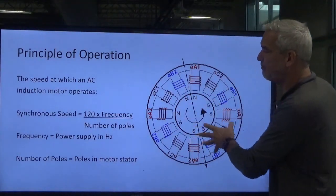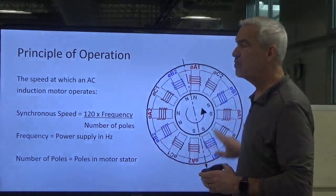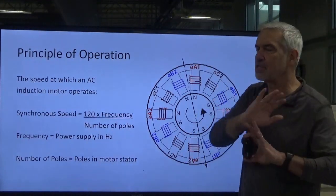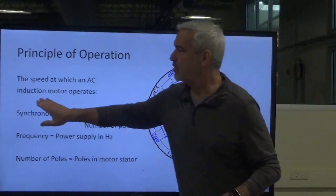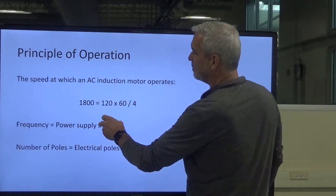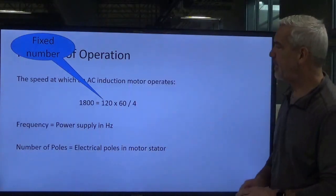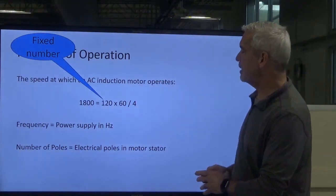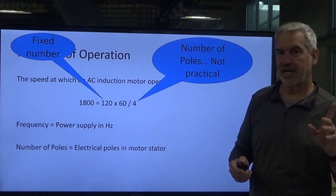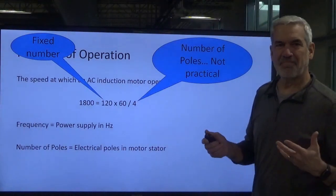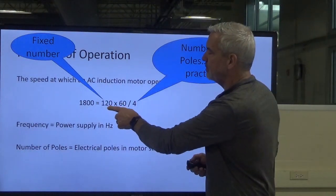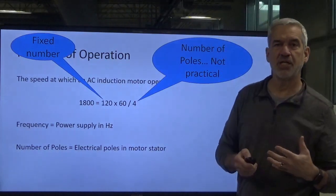We can't vary the incoming frequency, but we can control the outgoing frequency to the motor. Synchronous speed is the speed at which the rotating magnetic field is going around. The 120 here is a fixed number that stays in our formula. The 60 hertz stays consistent from our power company. And the number of poles, as I said earlier, is not practical to change. This is the formula: take the fixed number 120, multiply it by your frequency and divide by the number of poles in your motor. Most motors in the U.S. are four pole and run about 1,800 RPMs.